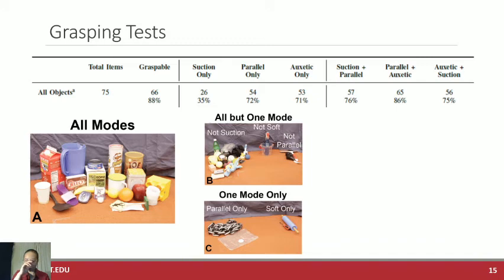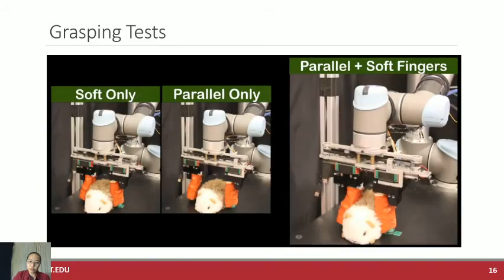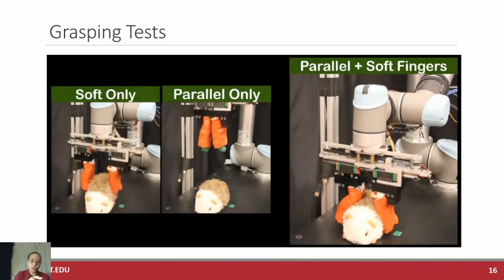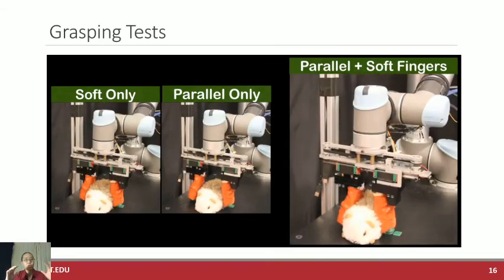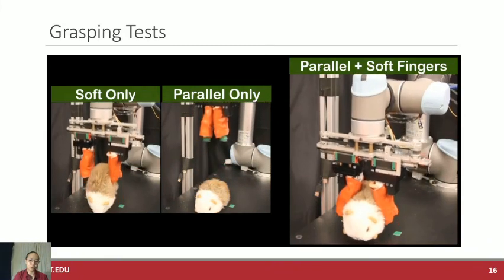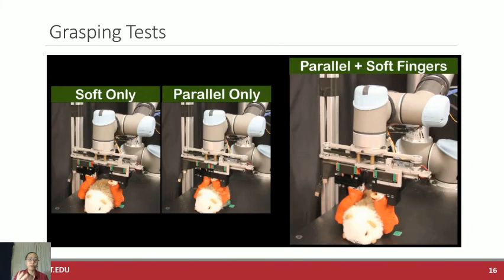We also saw that there were some objects that were easier to grasp with one mode rather than the other. But the objects that we really want to focus on are the ones that could only be grasped if you use a combination of two modes, because that's really where we see the benefit of multiplex manipulation come into being. Looking at what objects were able to do it, for example, for the skinny pig plushie, we can see that with just soft grasping or parallel grasping alone, we're not able to get the force needed or the curling underneath of the object to get a really secure grip. Once we use the combination of both techniques, we're actually able to grab an object that we couldn't with either mode.